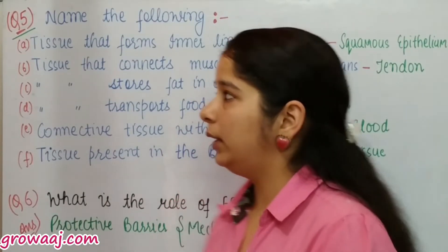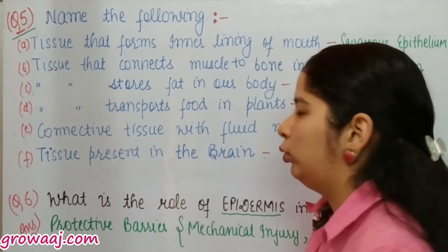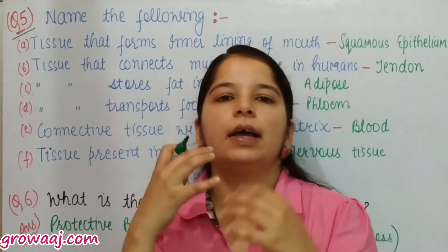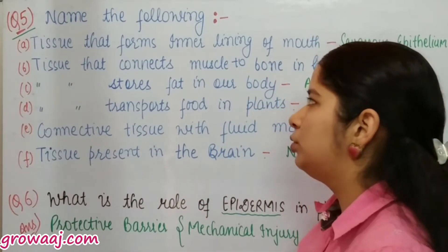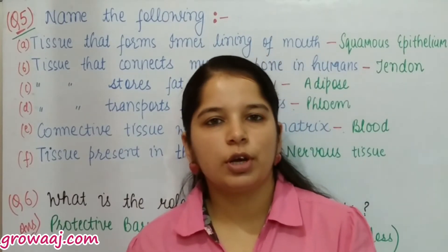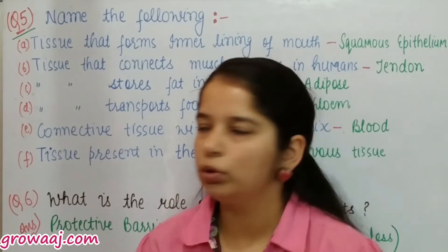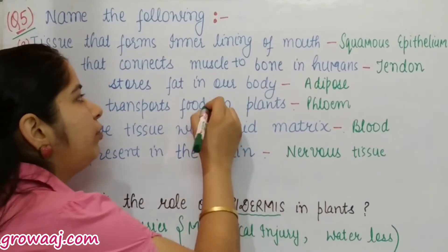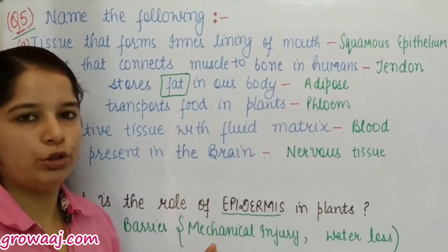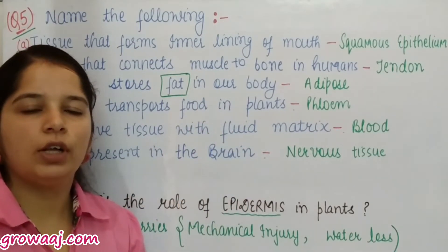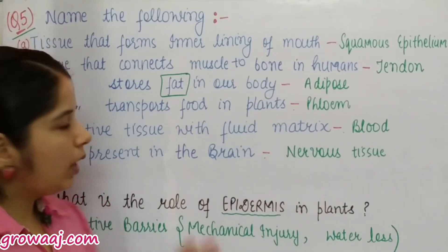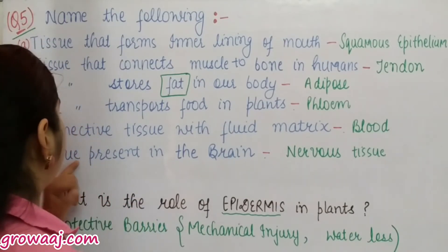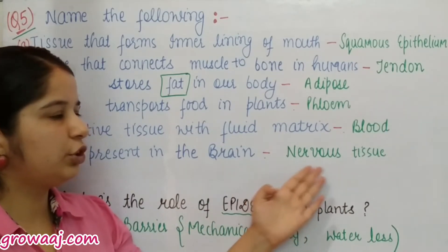Question five: name the following. The tissue forming the inner lining of the mouth is squamous epithelium, because of thin flat cells. Tissue connecting muscles to bones in humans is tendon. Tissue that stores fat in the body is adipose tissue. Tissue that transports food in plants is phloem, and water transport is by xylem. Connective tissue with a fluid matrix is blood. Tissue present in the brain is nervous tissue, which consists of neurons.